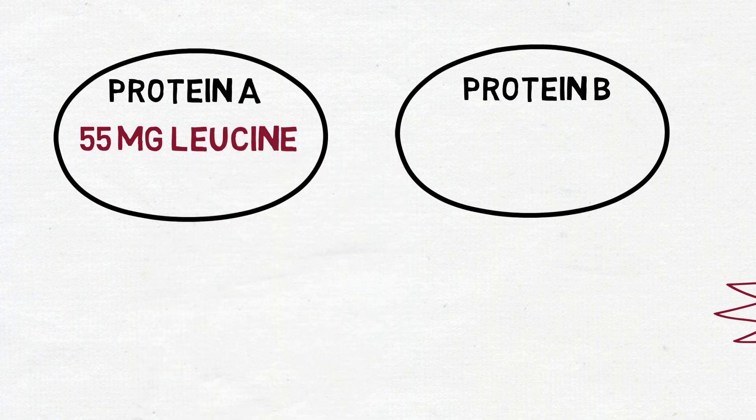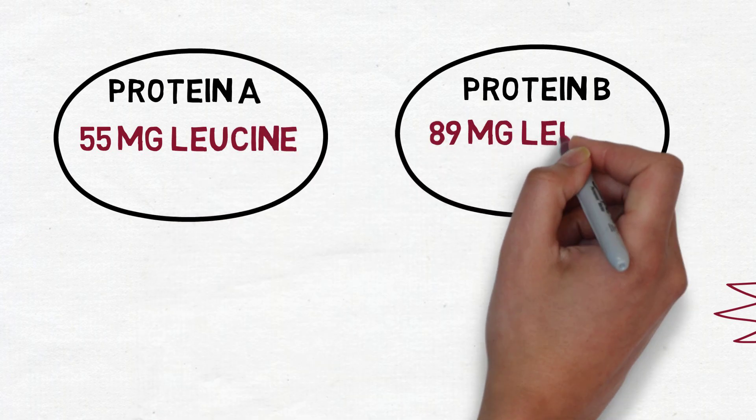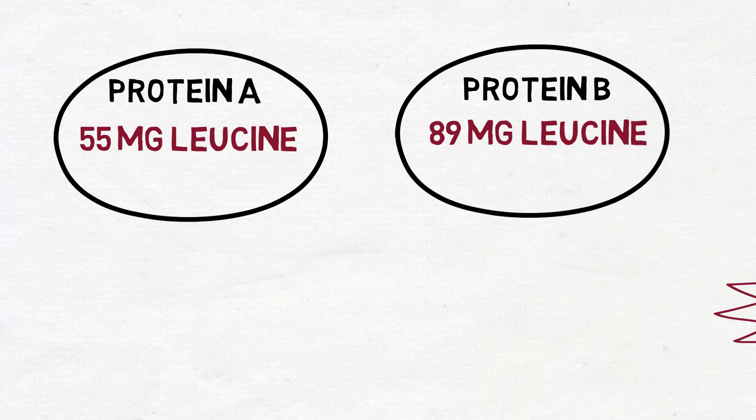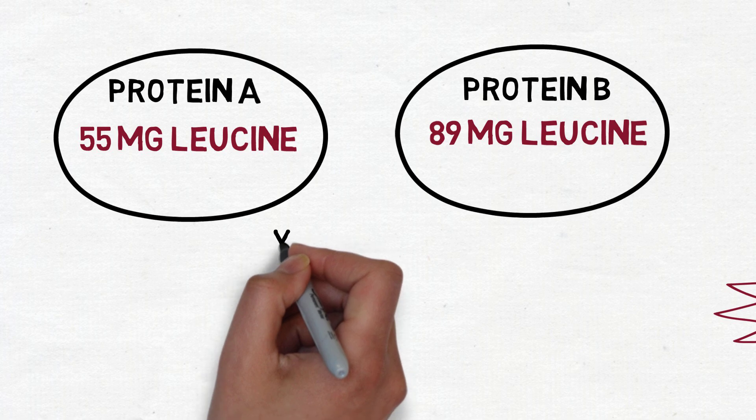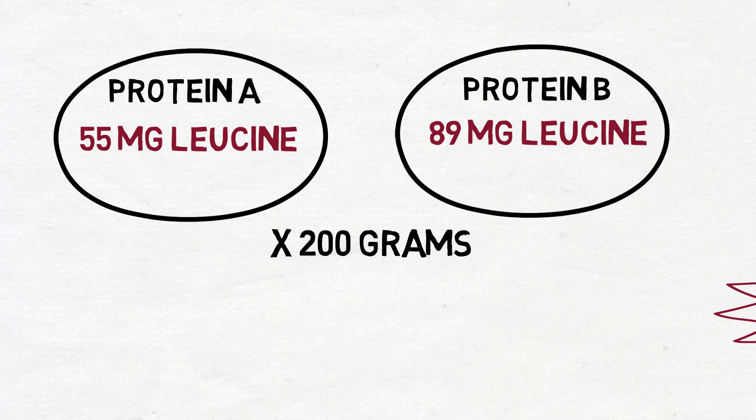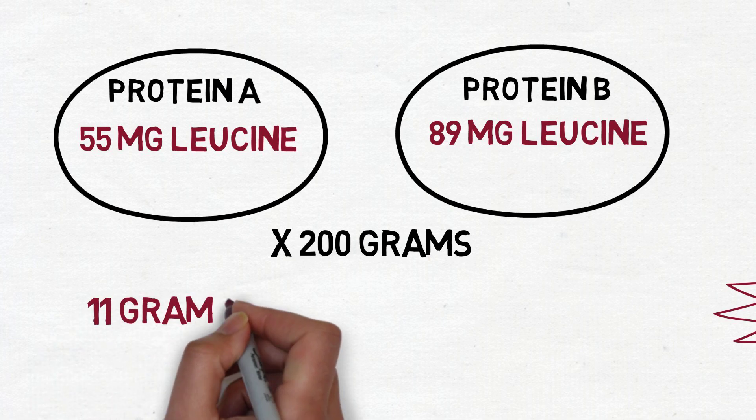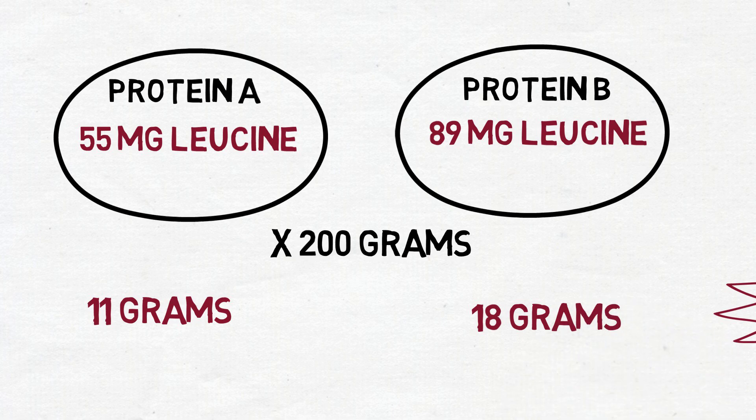Let's imagine two athletes each decide to consume 200 grams of protein. One selects a protein which contains a lower amount of leucine, the other chooses one which contains more leucine. They're each getting the same amount of protein, but one of them can end up getting several more grams of that all-important muscle building leucine. If you shoot for 200 grams of protein a day, you could be getting anywhere between 11 grams of leucine and 18 grams of leucine, just based on the decisions you're making of which protein you'll eat.